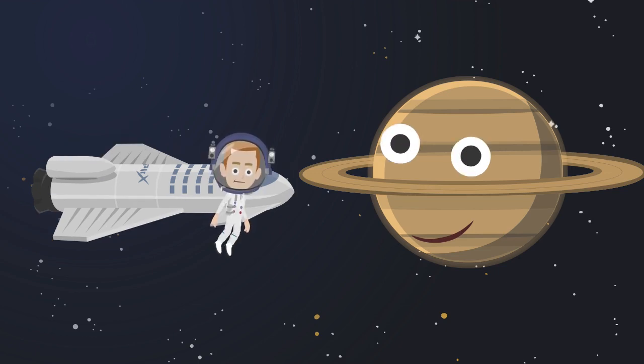This is Saturn. Saturn is the sixth planet from the sun. This is the second biggest planet after Jupiter. This is also a gas giant. Saturn has bright and beautiful rings around it.